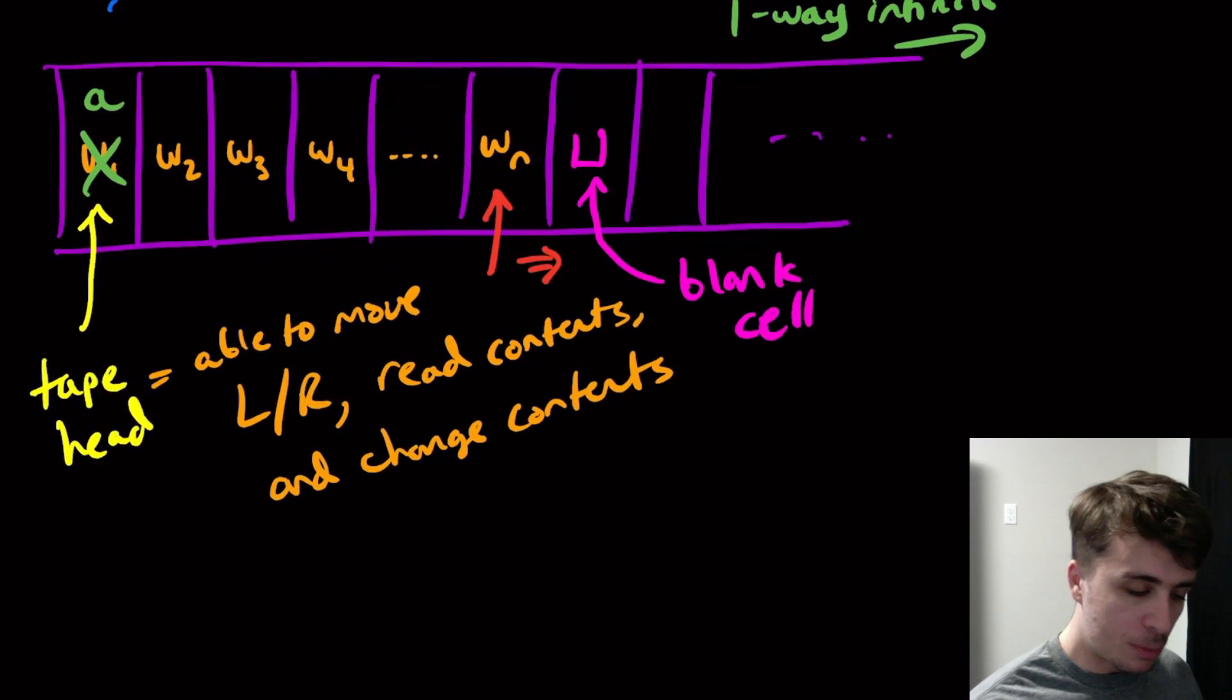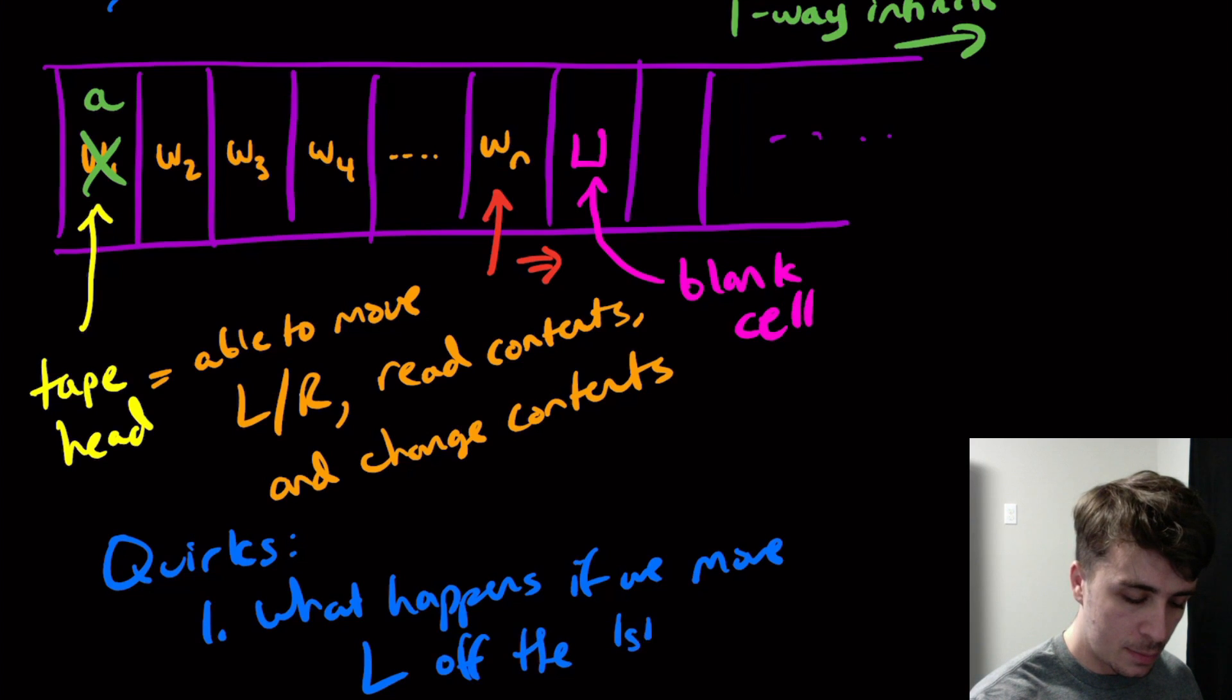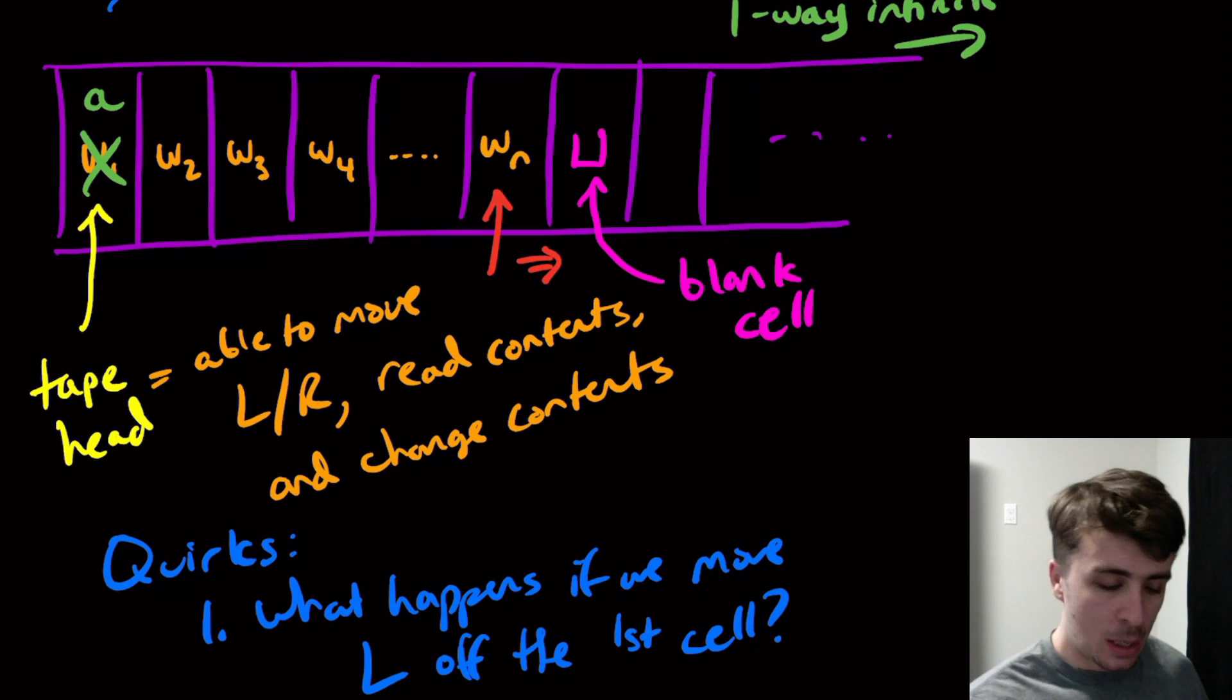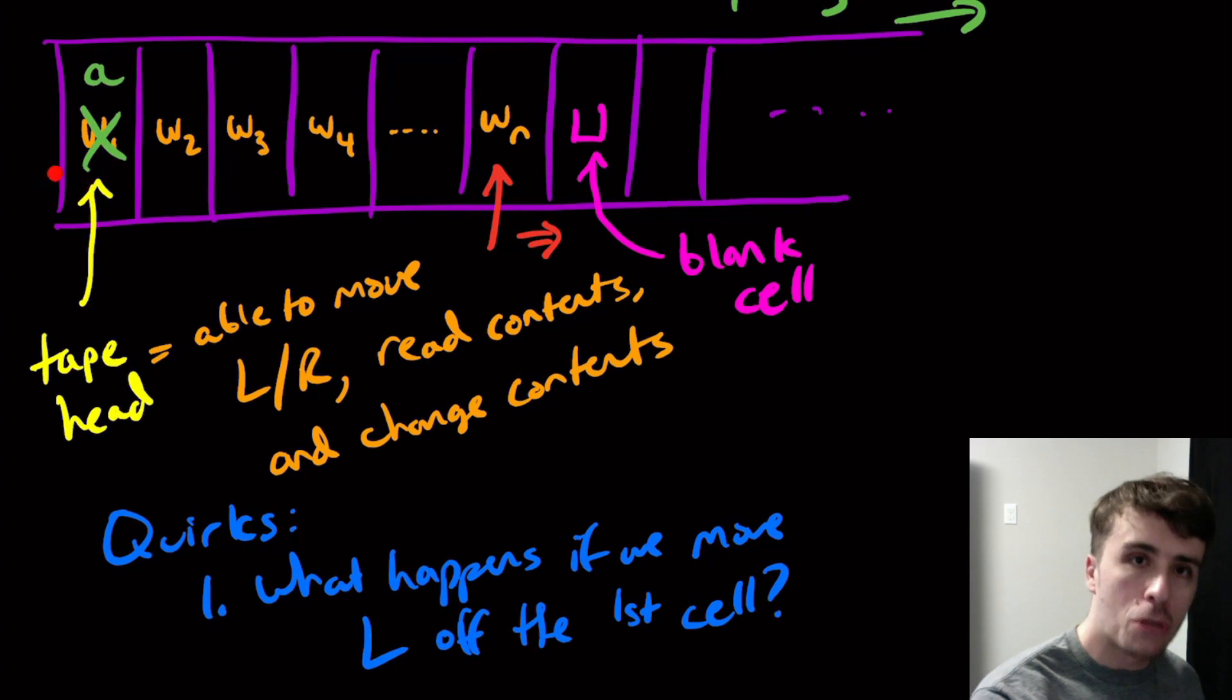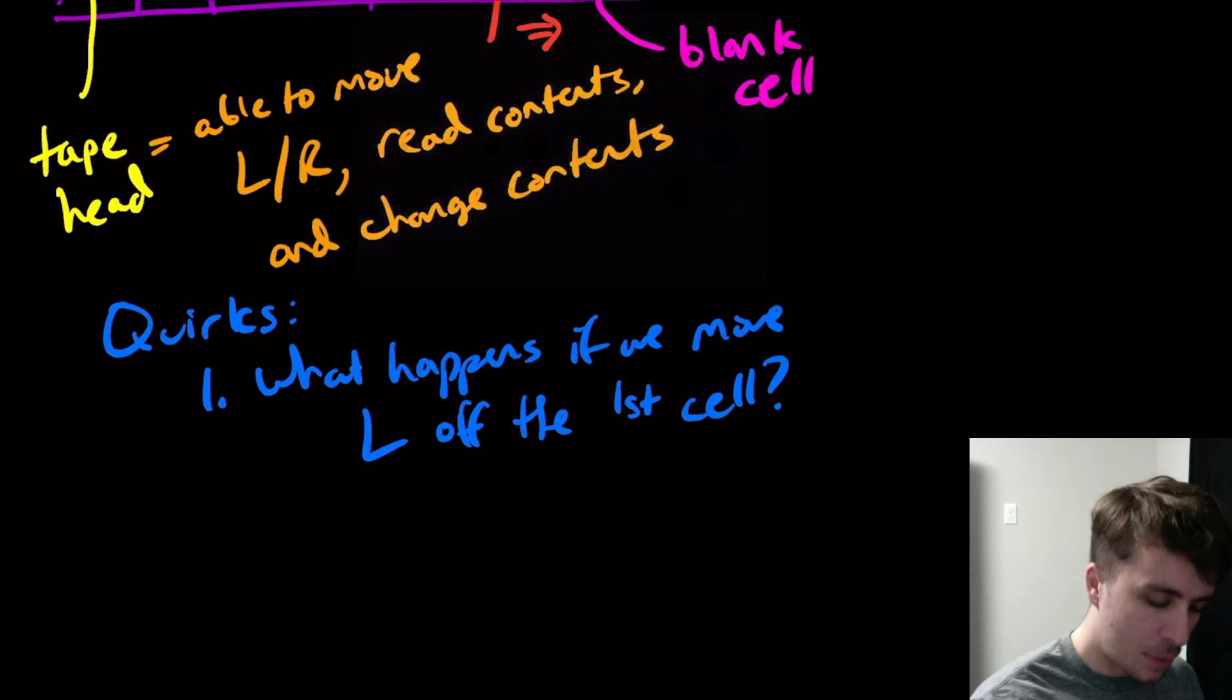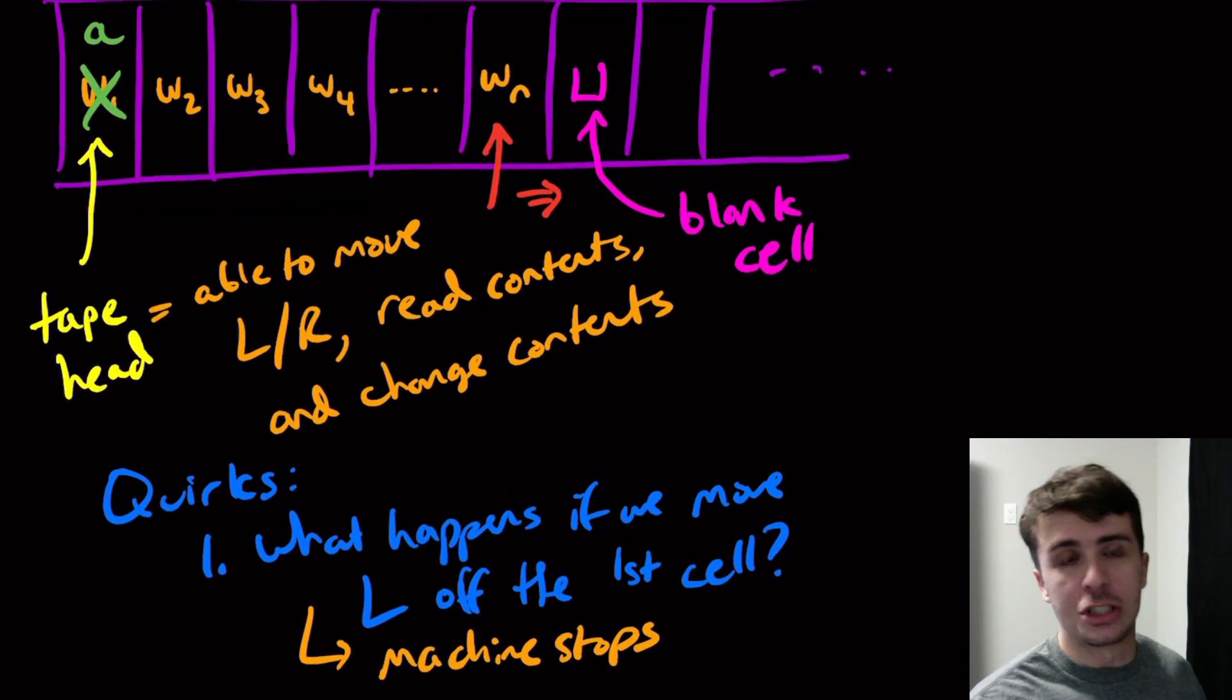Some quirks here that you may be asking: What happens if we move left off the first cell in the tape? If we're in this cell and we decide to move left, since it's only one-way, what actually happens? There are two philosophies here. Either you just stay in this cell, you don't actually move left, or the computation stops. The perspective we'll take is that the machine stops.